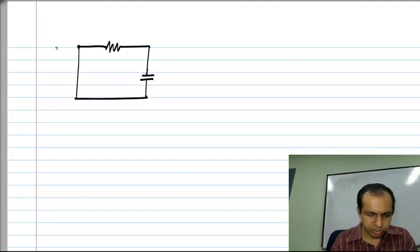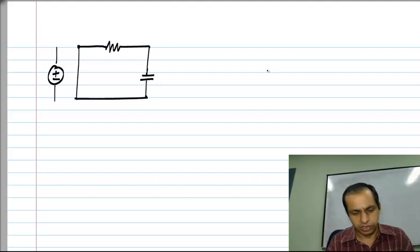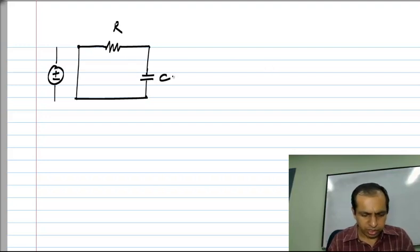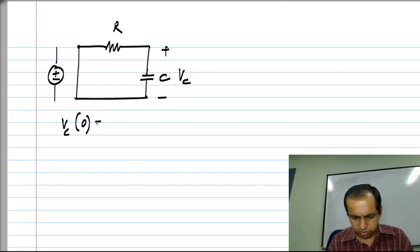So, this is zero input. You can imagine that there was a voltage source here which is set to zero, and I will assume that the capacitor voltage at t equal to zero is five volts.